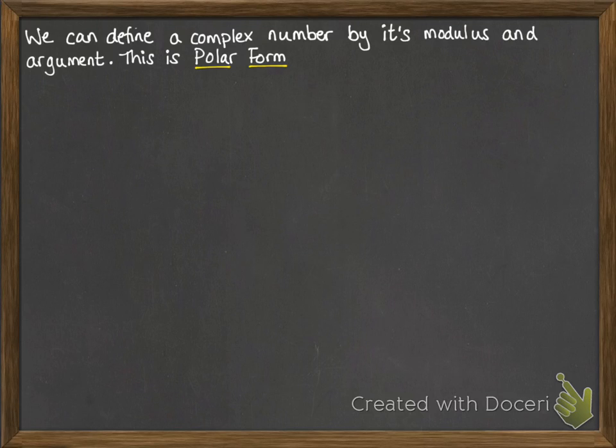Okay, so we can define a complex number by its modulus and argument, and that's what's called polar form. So if we have this complex number here, where we've got these values on there of r, y, and x, and then our angle is theta.